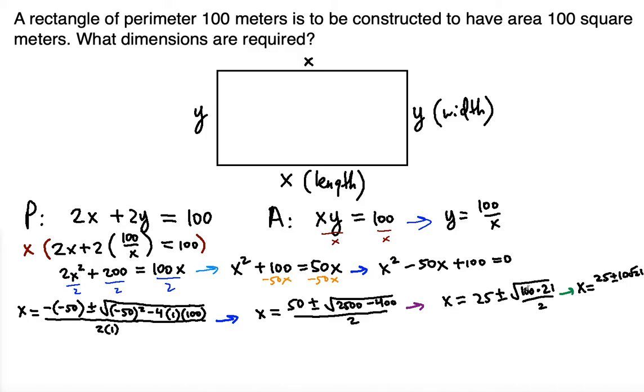So that leads to x being equal to 25 plus minus 10 radical 21, because 100 square root of 100 is 10 over 2. So 10 divided by 2, we can still do more. So that's going to be 25 plus minus 5 radical 21. So we found the length.